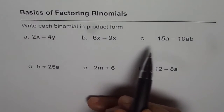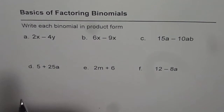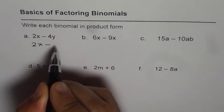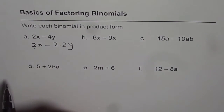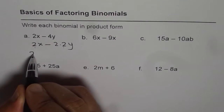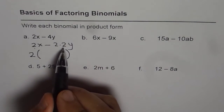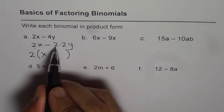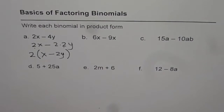Let us see how we can transform these differences or sums into product form. For 2x minus 4y, we can see that 2 is common here. We can write 4y as 2 times 2 times y. Since 2 is a common factor, we can take it out. If I write 2 outside a bracket, inside the bracket I have everything divided by 2. So 2x divided by 2 gives x, and 2 times 2 times y divided by 2 leaves 2y, giving us minus 2y.